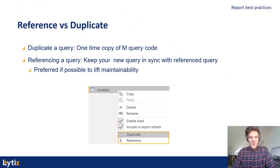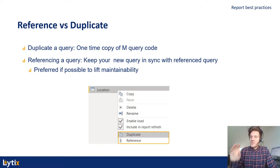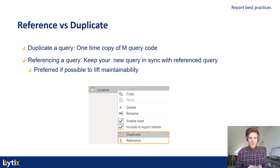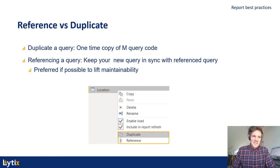Next up is the Reference versus Duplicate feature in the query editor in Power BI. What is the difference? Duplicate is just a one-time copy of the M query code — there is no sync at all. Referencing a query keeps your new query in sync with the referenced query, so there will be a sync between both of them. The second option is preferred to maintain maintainability, and it makes your model a little bit easier to maintain in the long run.